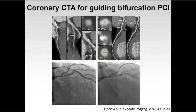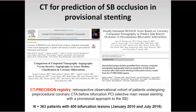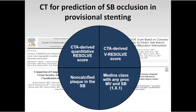Importantly, one potential explanation is that coronary CT, in contrast to invasive angiography, has the intrinsic ability to show the exact distribution of residual plaque, making you more prone to cover it with a single longer stent. Coronary CT can also be used to predict side-branch occlusion in a provisional stenting approach, as confirmed by our study group on the largest CT registry to date, including 363 patients with 400 bifurcation lesions. Indeed, both the quantitative and visually assessed CT-derived Resolve Scores, as well as the presence of non-calcified plaque in the side branch, and Medina class with any proximal main vessel and side-branch involvement as assessed by cardiac CT, have the ability to predict side-branch occlusion after main vessel stenting.